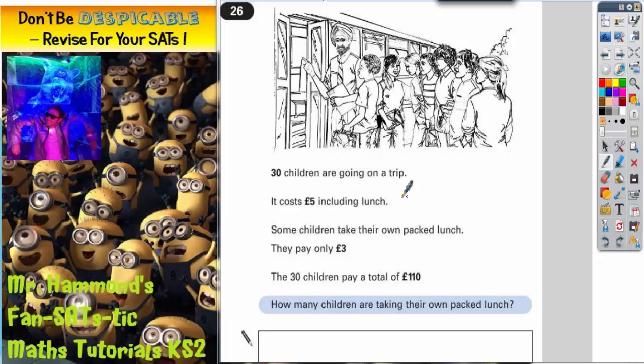Question 26. 30 children are going on a trip. It costs £5 including lunch. However, some children take their own packed lunch which means they pay only £3. 30 children pay a total of £110. How many children are taking their own packed lunch?